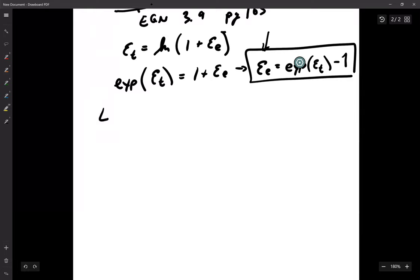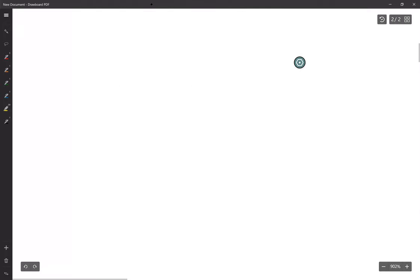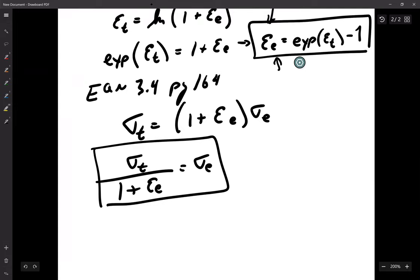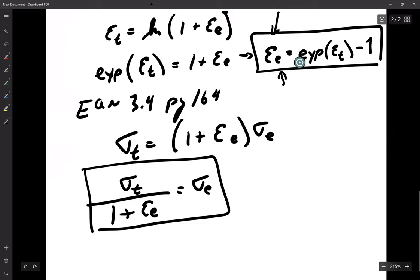Epsilon E. And then equation 3.4, page 164. Epsilon E can be changed to be this. So, substitution of the engineering strain and, I'm sorry about that, and the true stress will give us the engineering stress. So, this is how we solve problem 3.9. Alright.